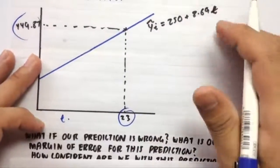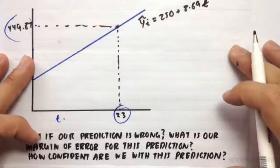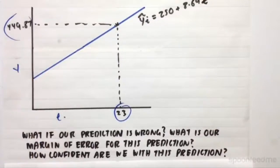So now the problem is, what if our prediction is actually wrong? And what is our margin of error for this prediction? And then how confident are we with this prediction? So we need to then construct a confidence interval.